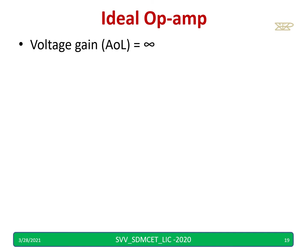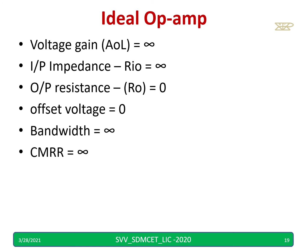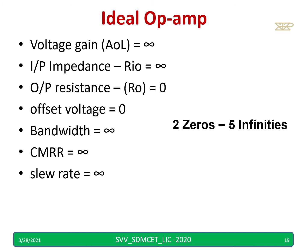For ideal op amp characteristics: voltage gain should be infinity, input impedance should be infinity, output resistance should be zero, offset should be zero, bandwidth should be infinity, CMRR should be infinity, and slew rate should be infinity. In brief, remember two zeros and five infinities so you can recall them whenever needed.